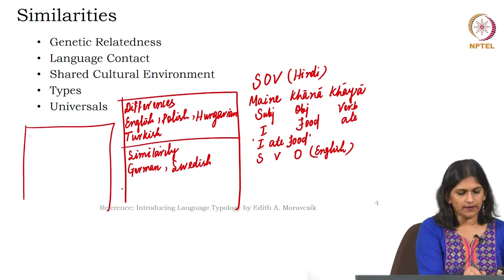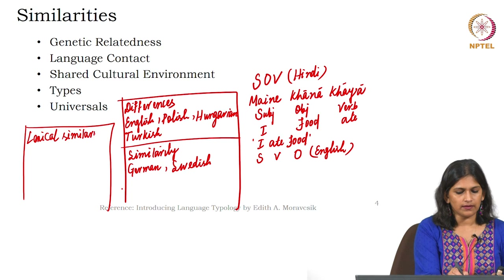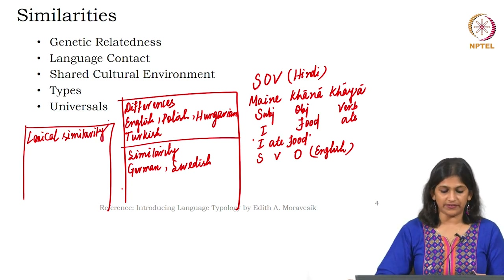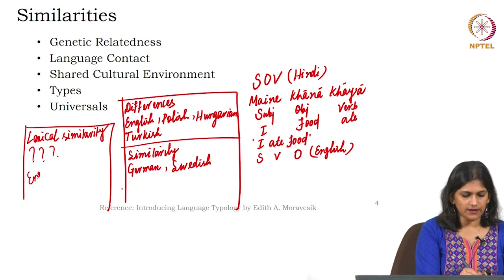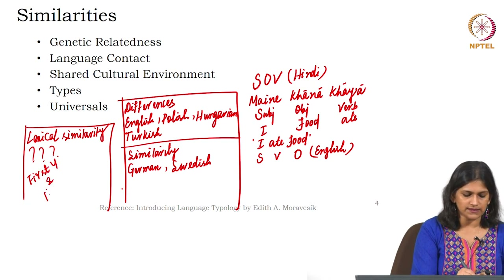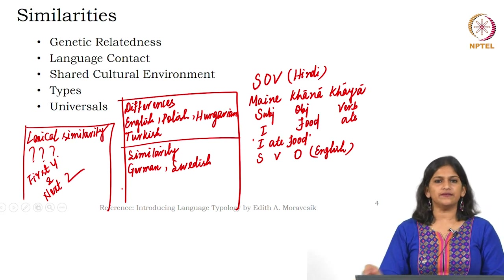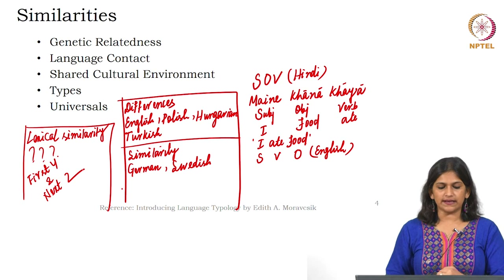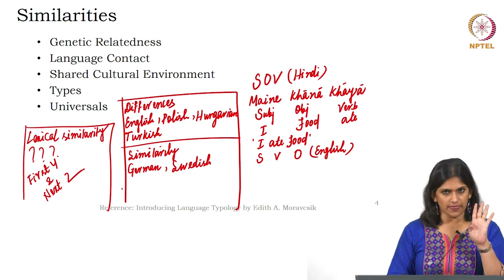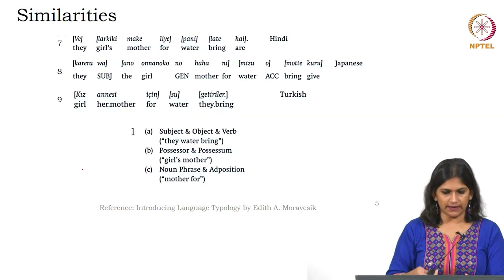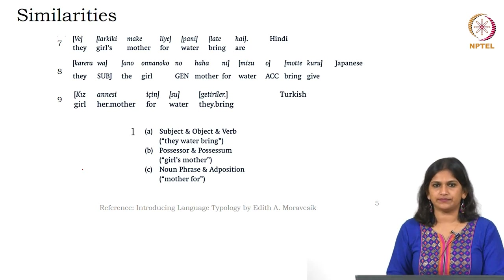Find out the lexical similarities — lexical similarities means similarity at the word level, or the lexicon level, or phrase level. Find out if there is any similarity in any of the first four languages — English, Polish, Hungarian, and Turkish — and the next two — German and Swedish. Your work is to find out if there is any lexical similarity with German and Swedish when you check the first four languages. Then get back to me; do it for yourself, and if there is any confusion do get back to me.